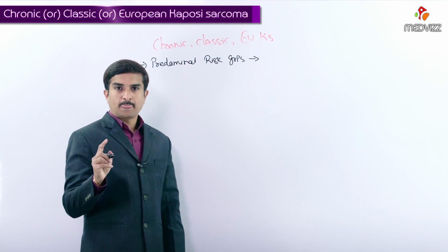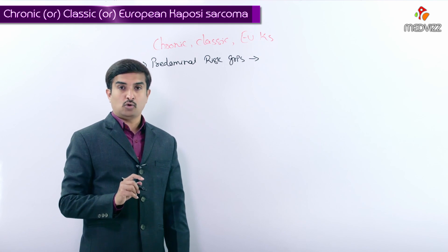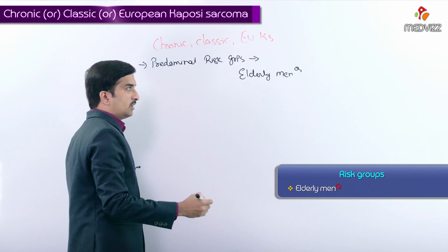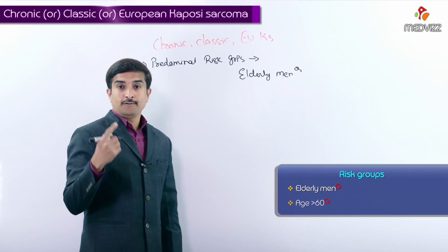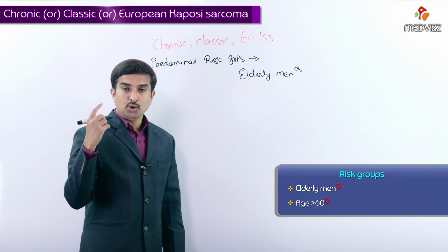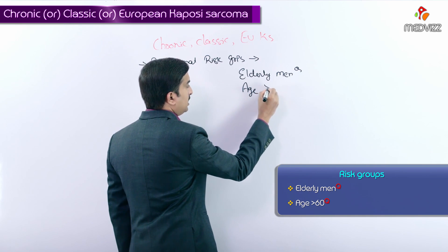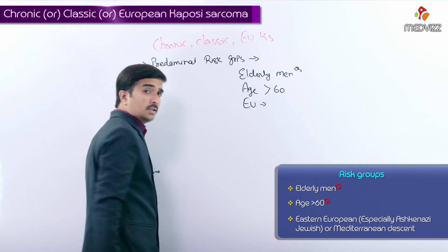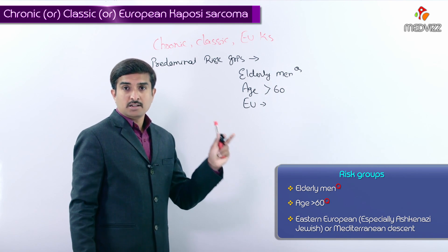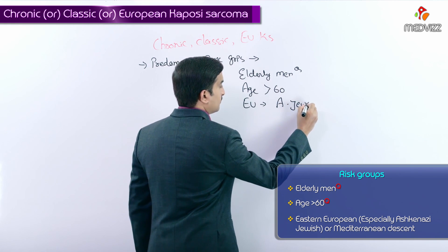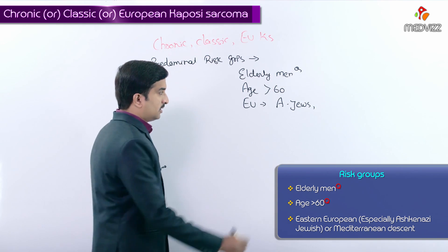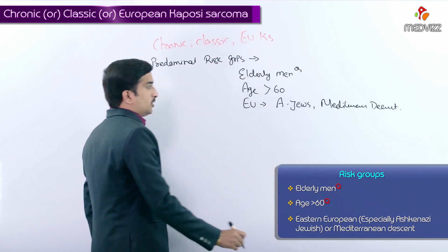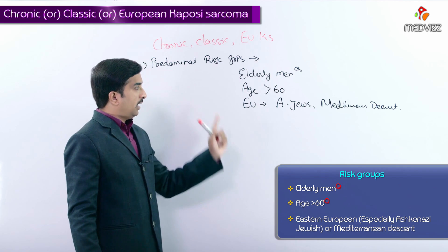The predominant risk groups for classic or European Kaposi sarcoma are elderly men, often age greater than 60 years, of Eastern European origin — especially Ashkenazi Jewish or Mediterranean descent.